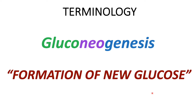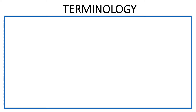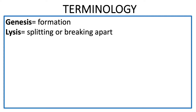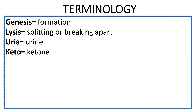Let's go through some word components that commonly appear at the beginning or end of terms. For example, in gluconeogenesis, 'genesis' at the end refers to formation. 'Lysis' refers to splitting or breaking apart. 'Urea' refers to urine. 'Keto' refers to ketone — for example, in diabetic ketoacidosis, that's a common word you'll come across.